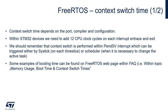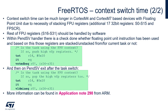Context switch time can be much longer in Cortex-M4 and Cortex-M7 based devices with a floating point unit, due to the necessity of stacking FPU registers — an additional 17 32-bit registers: S0 to S15 and FPSCR. The remaining FPU registers S16 to S31 should be handled by software. Within the PendSV handler, there is a check whether a floating point unit instruction has been used, and based on that, those registers are stacked or unstacked for the current task. There is an instruction TST testing R14 whether it contains the value 0x10. If yes, it means we need to store the FPU registers, as FPU code was executed within the current task. The same condition is checked after we switch the task. More information can be found in ARM Application Note 298.